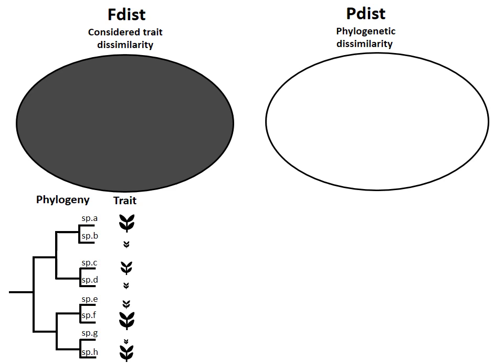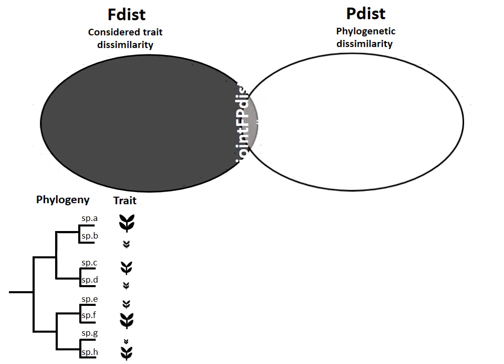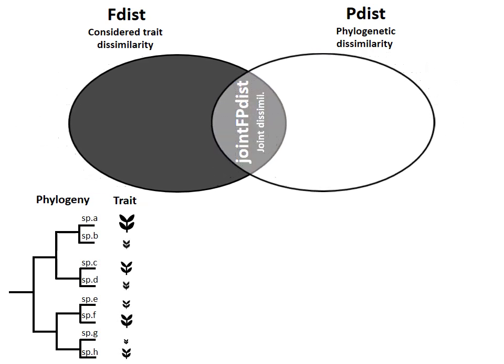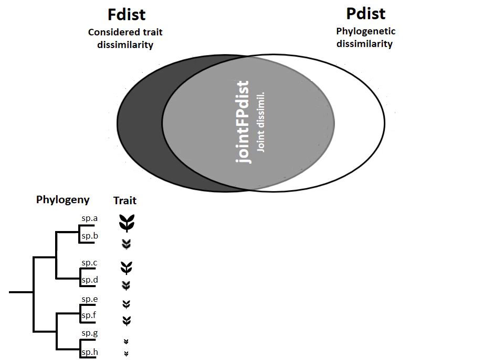However, functional and phylogenetic dissimilarities can also overlap when traits have high phylogenetic signal and phylogenetically related species are more functionally similar. Here you have such a transition between these two opposed cases — from an overlap between functional and phylogenetic dissimilarity to the case of maximum overlap, in the case of high phylogenetic signal.